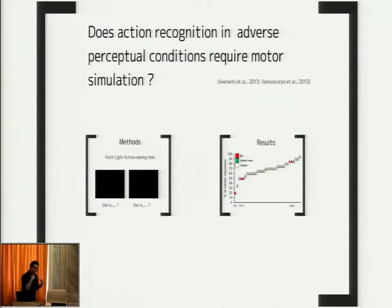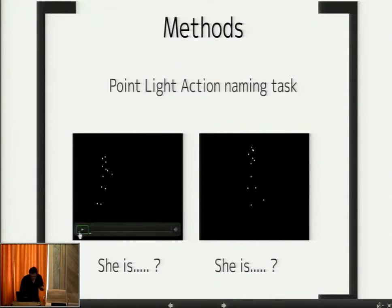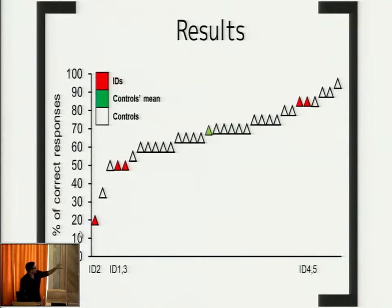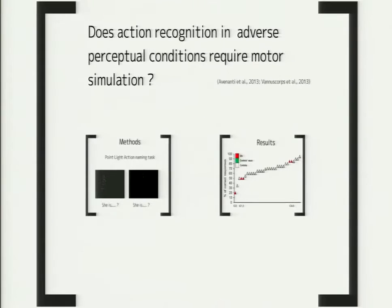However, it might be that motor simulation is particularly important when it comes to recognizing actions perceived in very difficult perceptual conditions. With this hypothesis, we showed our participants video clips of an actor reduced to only 12 light dots attached to his main joints. We presented them with 20 such video clips and asked them to name and recognize the actions. We calculated the percentage of correct responses for each participant, shown on the x-axis with the same color code. Two of the dysplastic people, despite being completely unable to motorically simulate this movement, were among the best participants. We conclude that we do not need motor simulation to recognize actions, even under very difficult perceptual conditions.